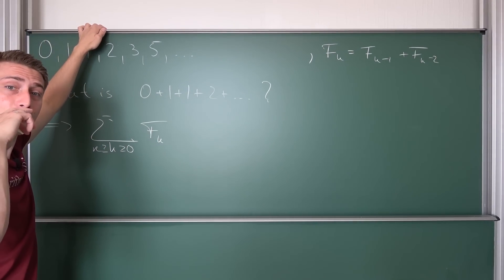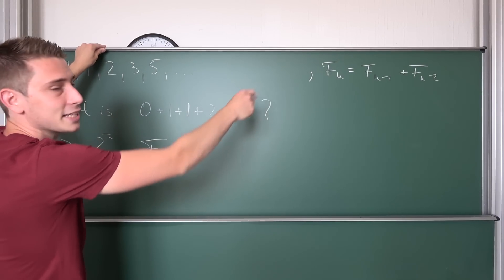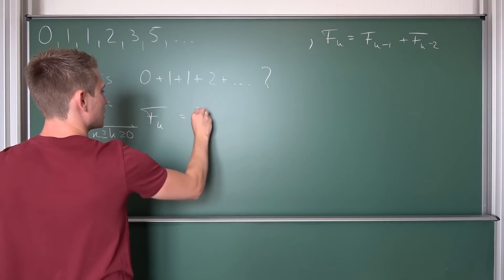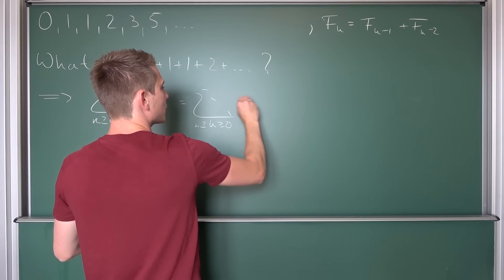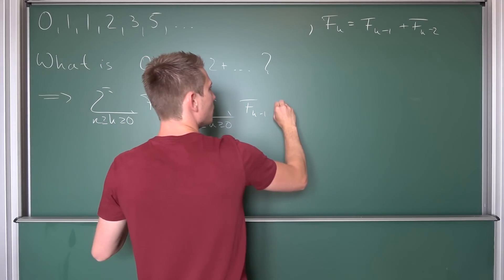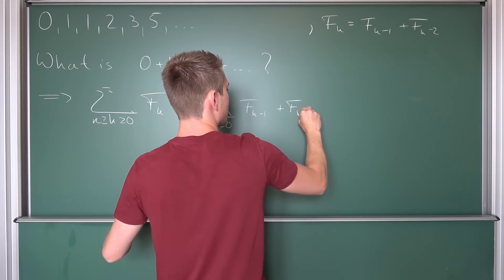Now just for our purposes, let us plug the Fk into here and see what we are going to get. We are going to get the sum being bounded between zero and n of Fk-1 plus Fk-2.